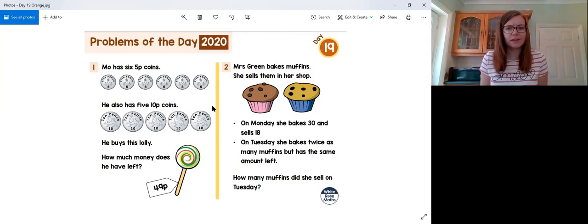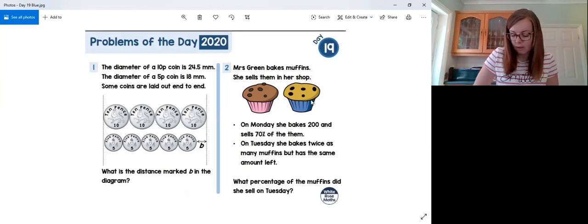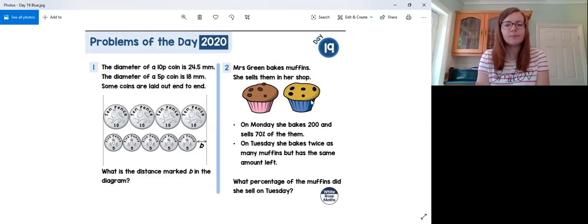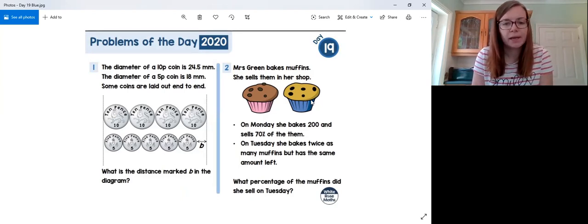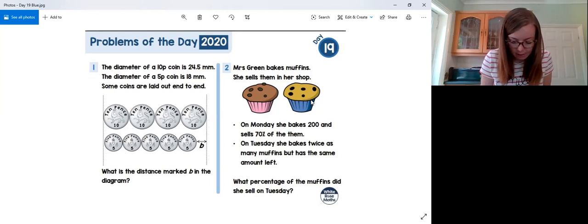Okay, and that's it. That's orange of day 19 done. That felt really quick today. So let's move on to blue of day 19. I think it's because there's only two questions. So we have got a diagram here and it tells us that the diameter of a 10p coin is 24.5 millimeters. The diameter of a 5p coin is 18 millimeters. And some coins are laid out end to end as you can see in the picture.